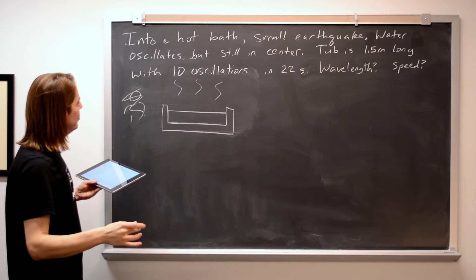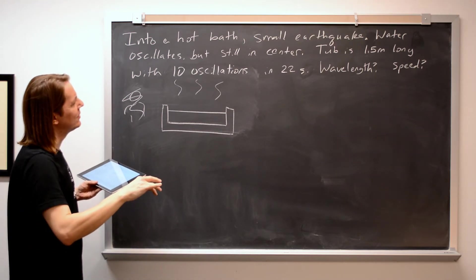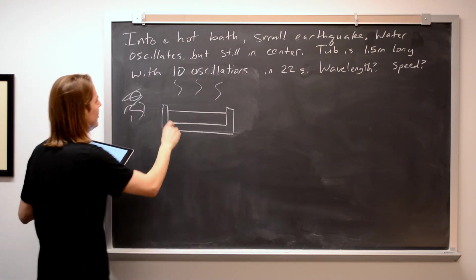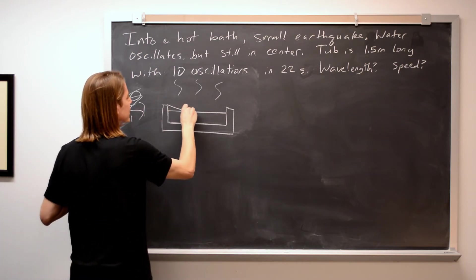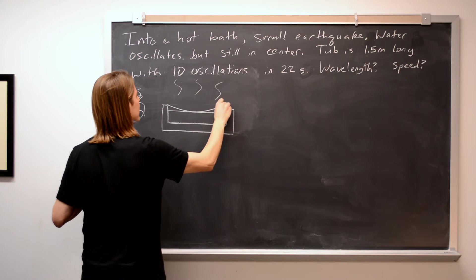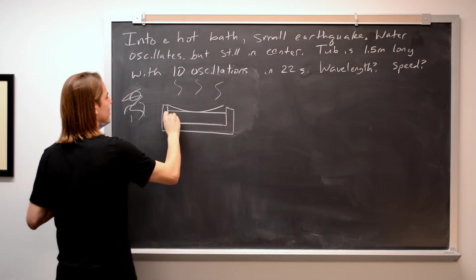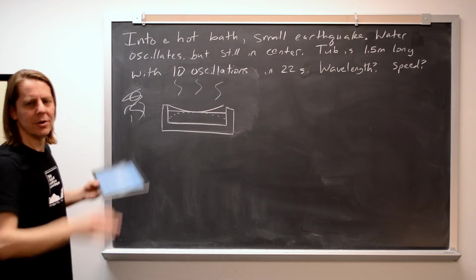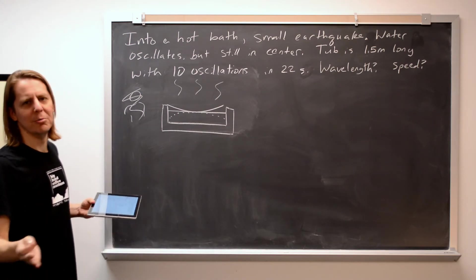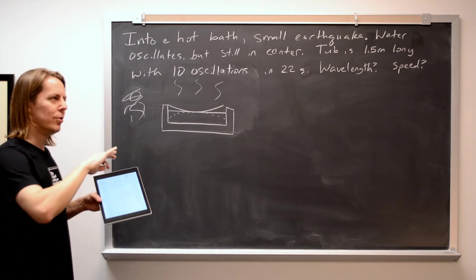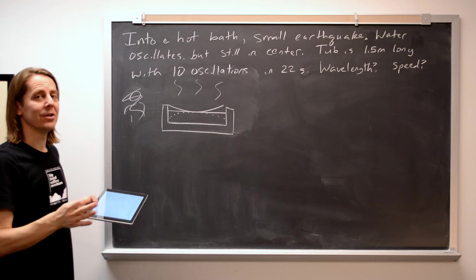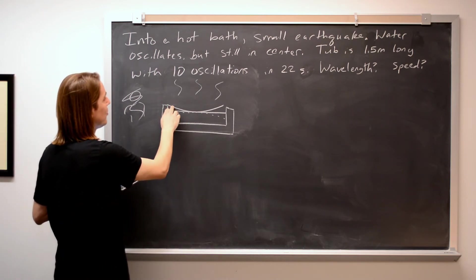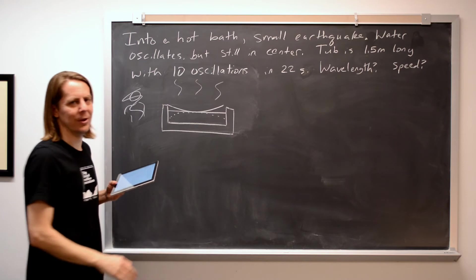Let's think about how this is going to move. If it's going up and down and back and forth but still in the center, you could draw it like this — the water goes like that, and then a half cycle later, it goes like that. The ends are going up and down. But the water isn't going to move that way because water is incompressible. The volume of the water has to stay constant, so you can't have the volume increase and then decrease.